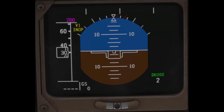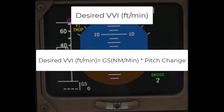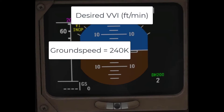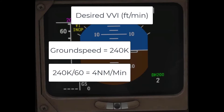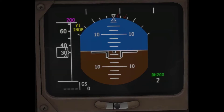We can approximate our desired VVI by taking our ground speed in nautical miles per minute — divide your ground speed by 60 — then multiplying by that degree pitch change. So if my GPS tells me I'm doing 240 knots on the ground and I calculated a 5-degree descent: 240 divided by 60 gives me 4, times 5 is 20. Multiply by 100 and that gives you a 2,000 foot per minute descent.